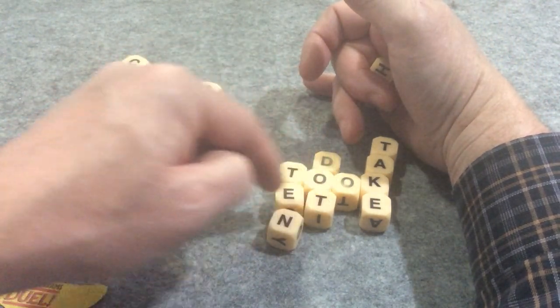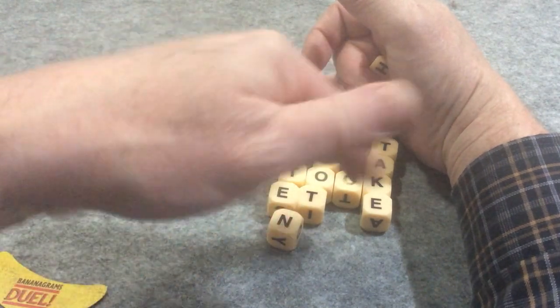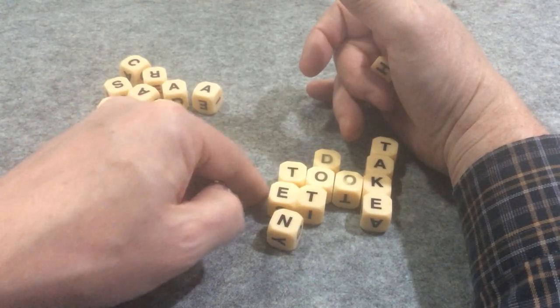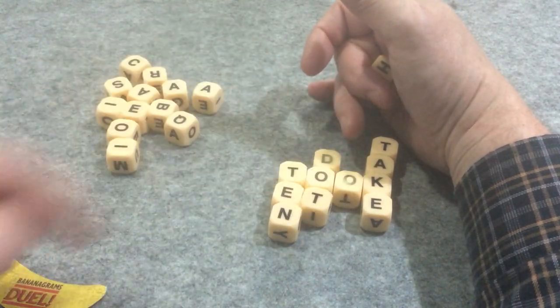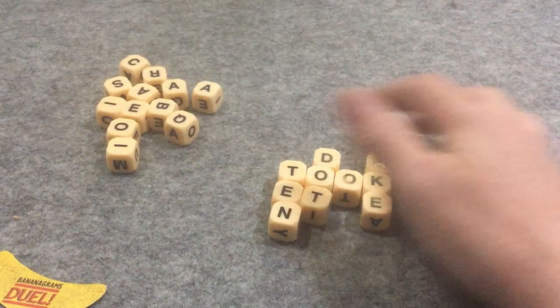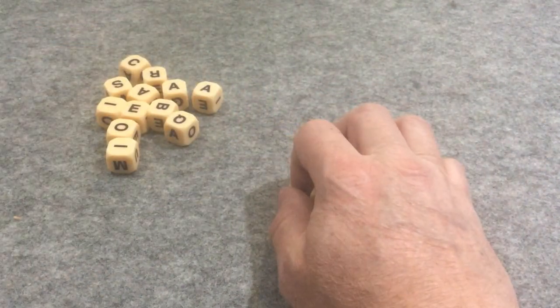So dot obviously is okay, but the ET would not be allowed. So you have to make sure it reads properly both horizontally and vertically when it's making words in both directions like that. But the first way I've shown you was acceptable, so that would have earned me my first point.